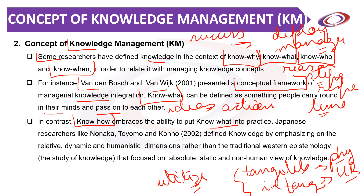Researchers like Nonaka, Toyoma and Kono defined knowledge by emphasizing relative, dynamic and humanistic dimensions, rather than traditional epistemology which focused on the absolute, static and non-human view of knowledge. The term knowledge is one of the more confusing aspects of knowledge management because terms like information or data are sometimes used as synonyms, but they are very different. Data or information refers to the raw gathering of facts, whereas knowledge refers to the what, when, and how aspects.